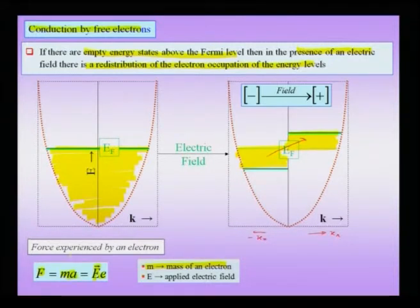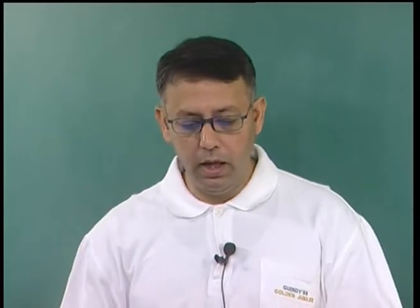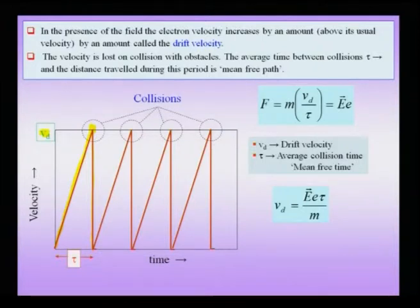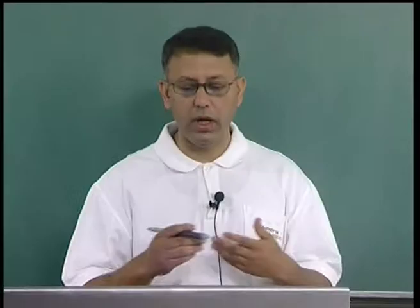Since F = ma, the electrons will be accelerated by the electric field and one would expect them to keep gaining velocity. But no material is perfect — when electrons are accelerated at constant acceleration and gain velocity, when they approach a velocity known as v_d they get scattered, suffering collisions. When an electron suffers a collision, its velocity falls down to 0. Because of the electric field, the electron is again accelerated to velocity v_d, then suffers another collision and velocity comes down to 0. This is an idealistic average picture — in reality each electron follows a different path before collision.